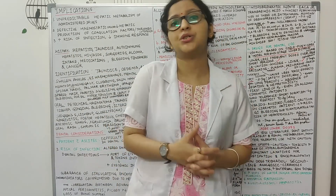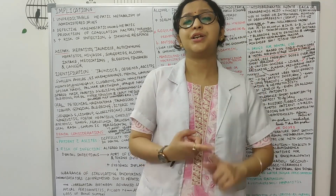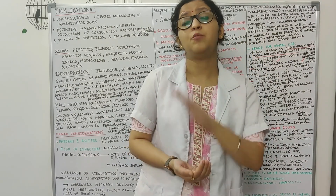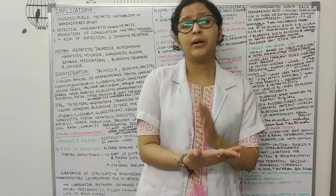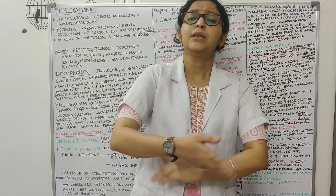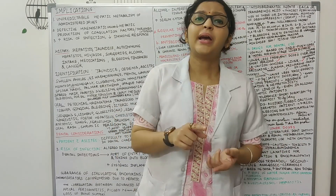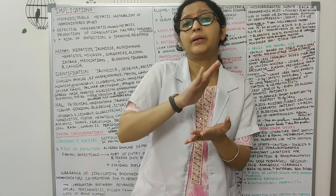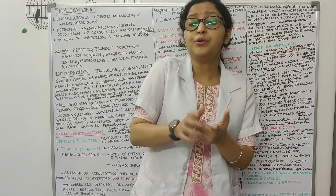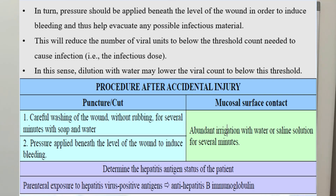Even after taking all precautions, if you get exposed to hepatitis B, and you are not vaccinated, receive an injection of hepatitis B immunoglobulin within 24 hours and do not delay it more than one week. You can also take the hepatitis B vaccine on the same day on the other side. If you get pricked while treating a hepatitis B patient, wash the area with tap water or sterile water, do not rub the area, and press from behind so that some blood comes out from the prick site, which reduces the viral load.